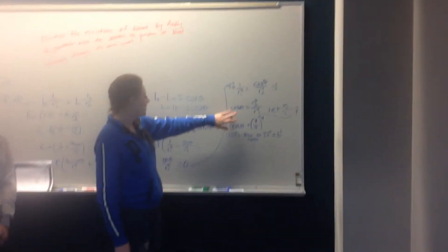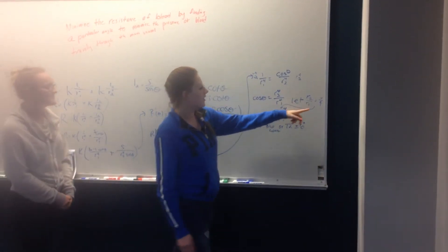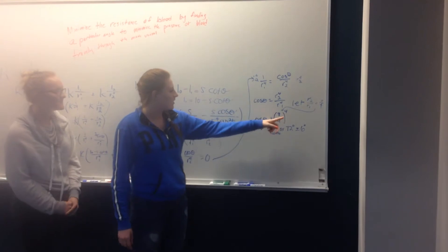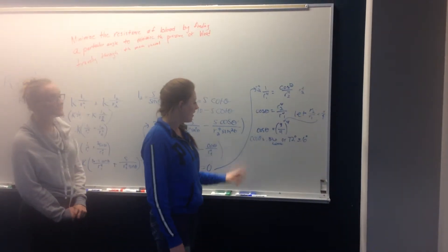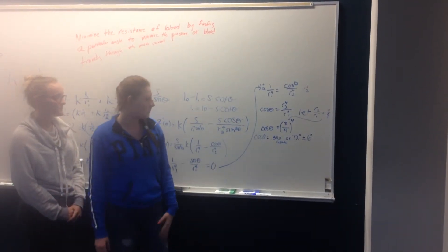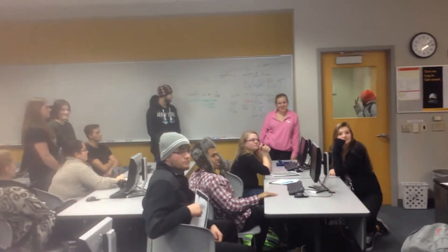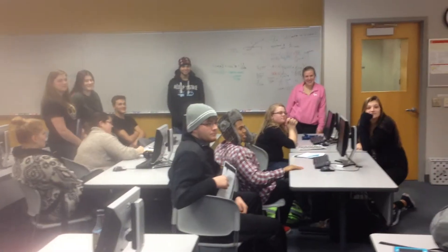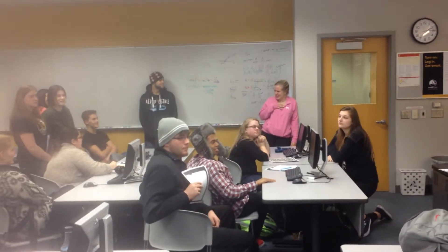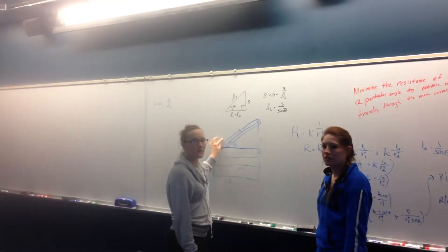And then in the packet it said to let R2 over R1 equal 3 fourths, put it to the fourth, and it gives you a math result. That's like the least — if the angle is that size, then it gives the least resistance you can get from blood pressure. You're right.